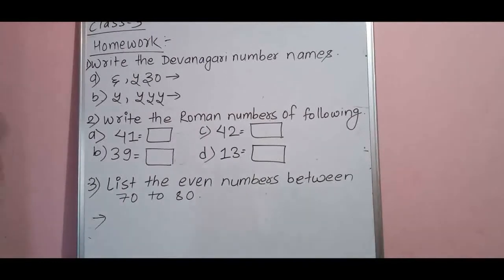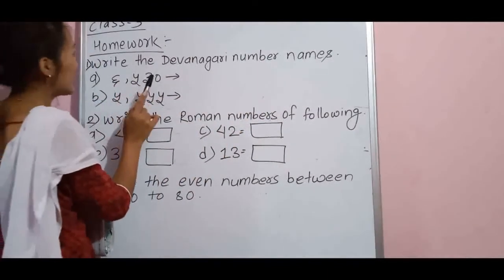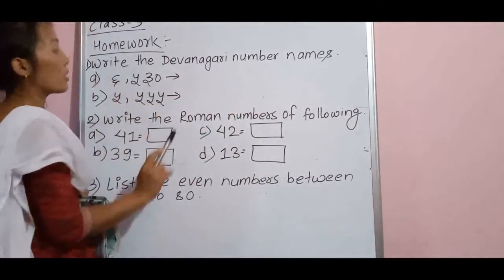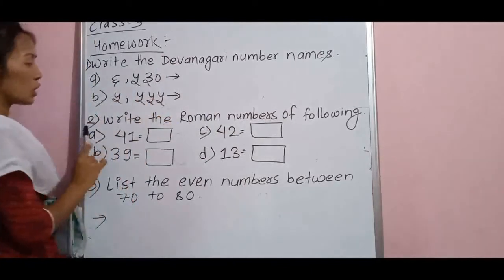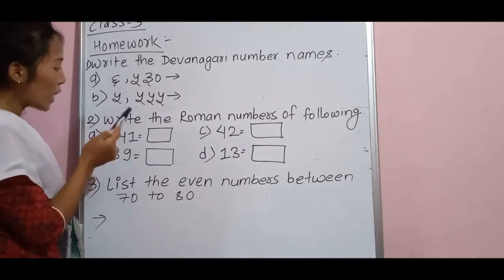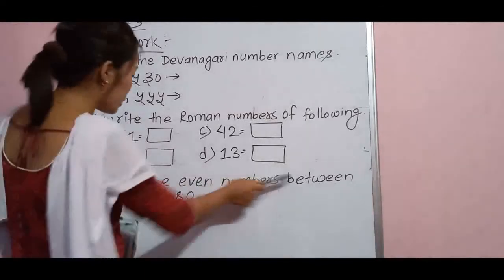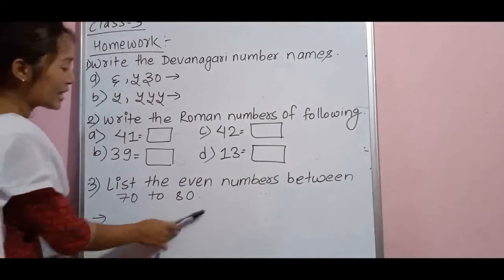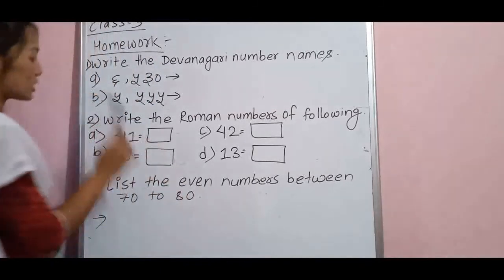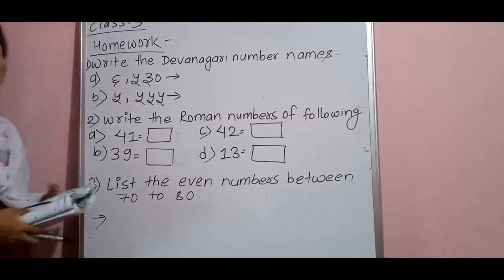Here is some homework for you. First question: write the Devanagari number names — you have to write the Devanagari numbers in words in Nepali. Second: write the Roman numbers for the following Hindu-Arabic numbers. Third: list the even numbers between 70 and 80. Please do your homework correctly. Thank you so much for today.